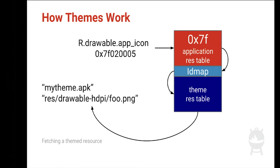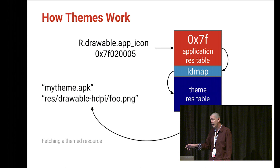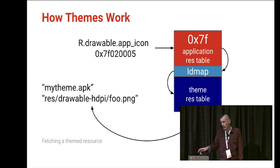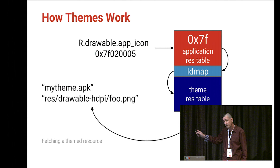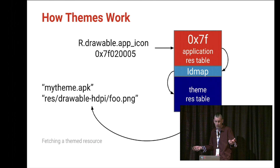When an application requests a resource — say a drawable called app_icon — it goes to the asset manager, which takes the provided ID and looks up the resource in the package. If it sees an ID map attached, it points to the theme's resource table and returns the theme resource instead. So even though we asked for app_icon, what we get back is the theme version, such as foo.png. It's really fast — like the resource was never themed.